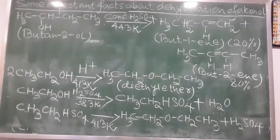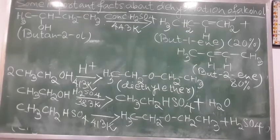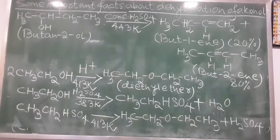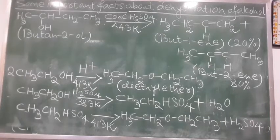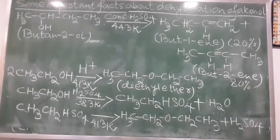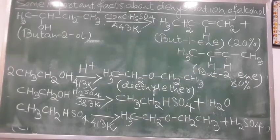It may be noted that the reaction between alcohol and concentrated sulfuric acid depends on the conditions. At 443 Kelvin, ethanol gives ethene as the product. When heated with excess of alcohol at 413 Kelvin, it forms an ether: 2 CH₃CH₂OH gives CH₃CH₂OCH₂CH₃ (diethyl ether). At 383 Kelvin, ethyl alcohol and sulfuric acid react to give ethyl hydrogen sulfate: CH₃CH₂OH + H₂SO₄ gives CH₃CH₂HSO₄ + H₂O.